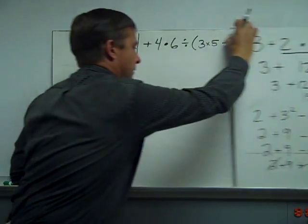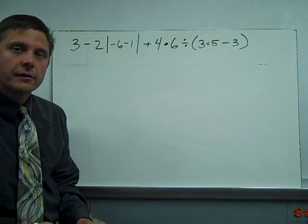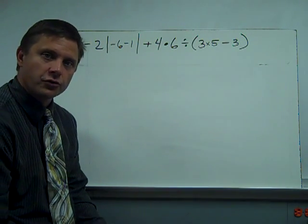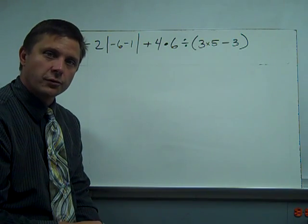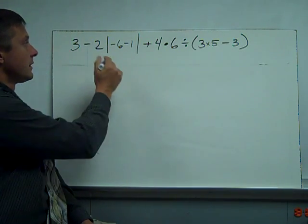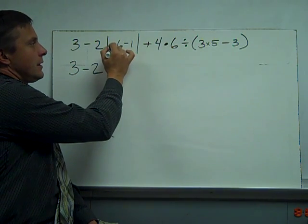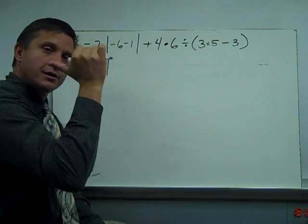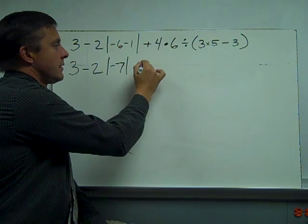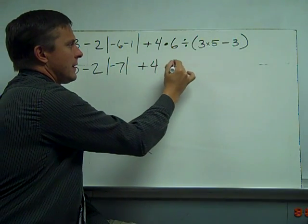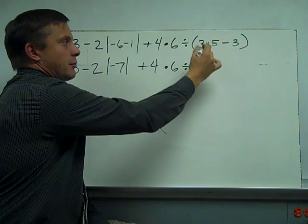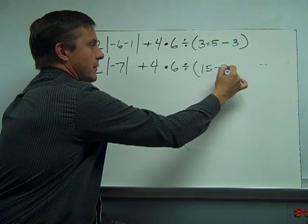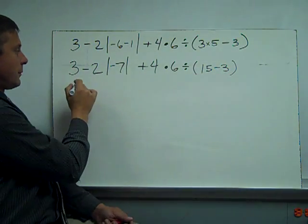I have one more example up here. And this time I don't have the little, please excuse my dear Aunt Sally, but we're going to go through it. It's a longer problem. If you think you can do this, pause the video and try. I'm just going to work this through left to right starting by doing the parenthesis. Here, in this absolute value, negative 6 minus 1, both to the left, so it's negative 7. In the parenthesis, I have to do operations first. I get 15 minus 3. Alright, now I'm going to go down.